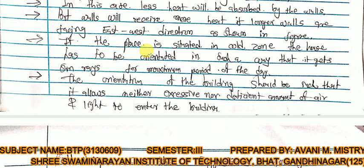In a cold zone, the opposite applies compared to India's hot zone planning. The longer walls should be placed in the east or west direction so that the building receives maximum sun rays. So in the cold zone, longer walls face east-west, whereas in India (hot zone), shorter walls face east-west.